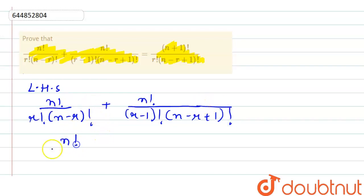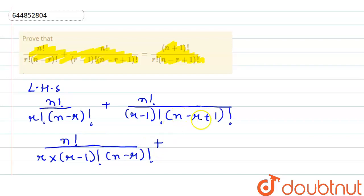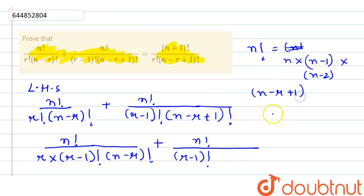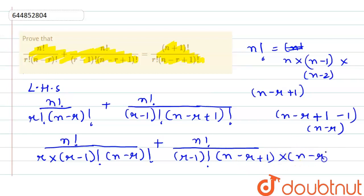We can write R factorial as R into R minus 1 factorial, into N minus R factorial. Similarly, we can write N minus R plus 1 as N factorial by R minus 1 factorial. As we know, N factorial is N into N minus 1 into N minus 2. So to write N minus R plus 1, we subtract 1, giving N minus R. So here we have N minus R plus 1 into N minus R factorial.